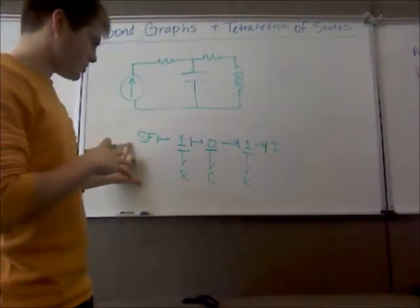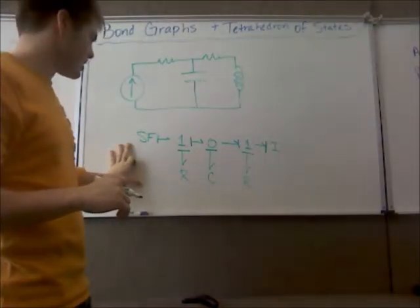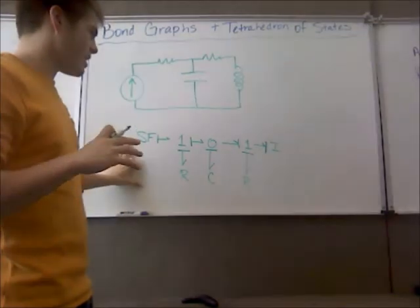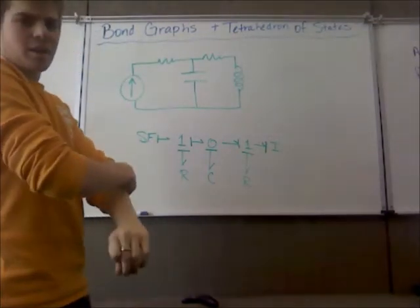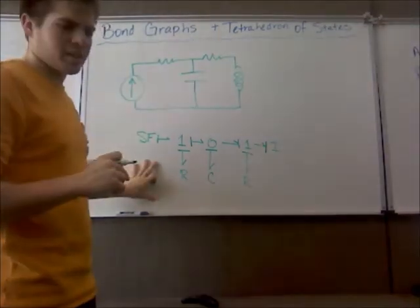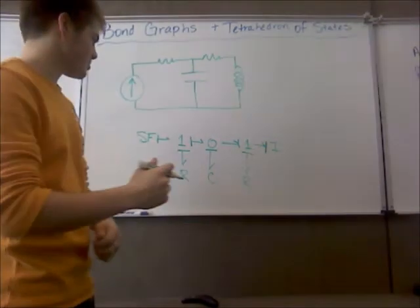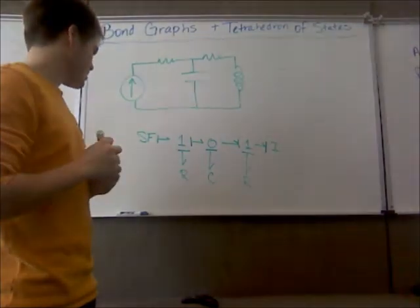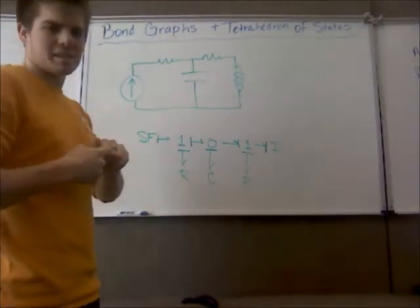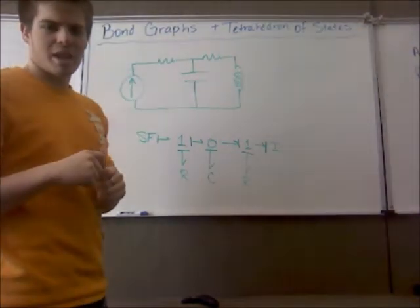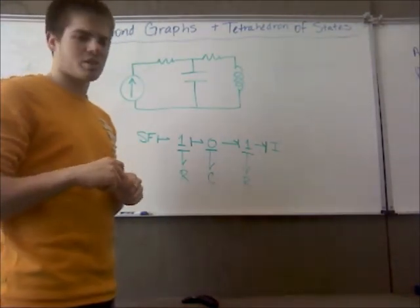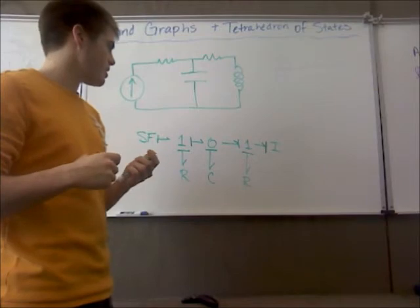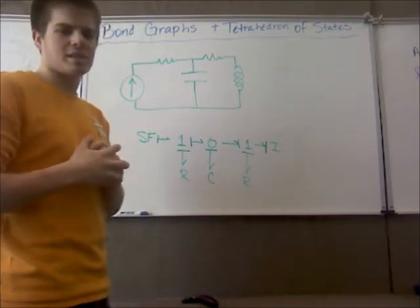Our bond graph system with all the causal strokes on it and we've got no problems with that. Again for this one we're in integral causality. We didn't have any compliance luckily. When that does happen and you have compliance you just have to assign and choose which one you want to be the state variable.